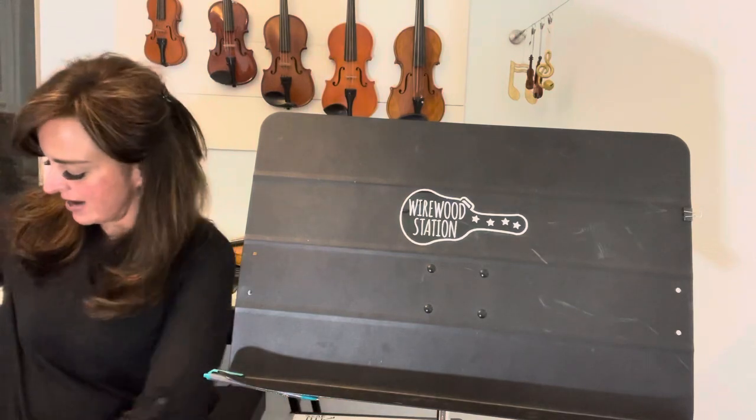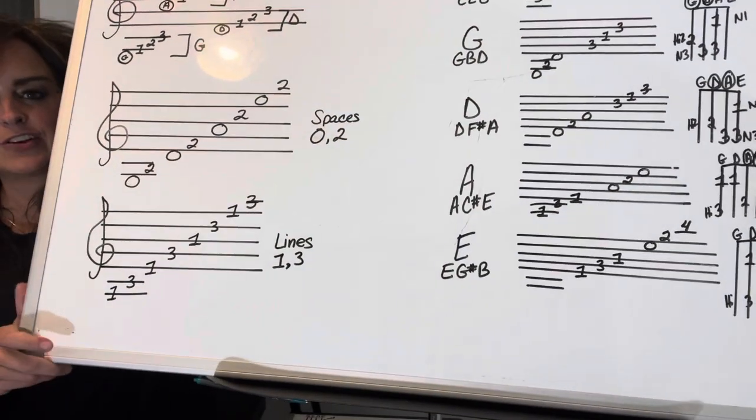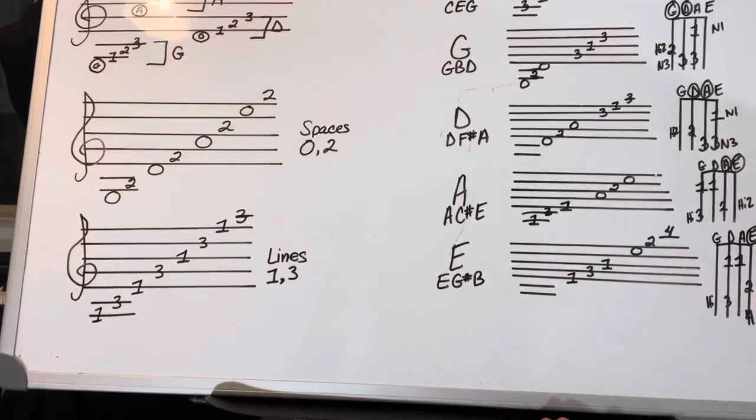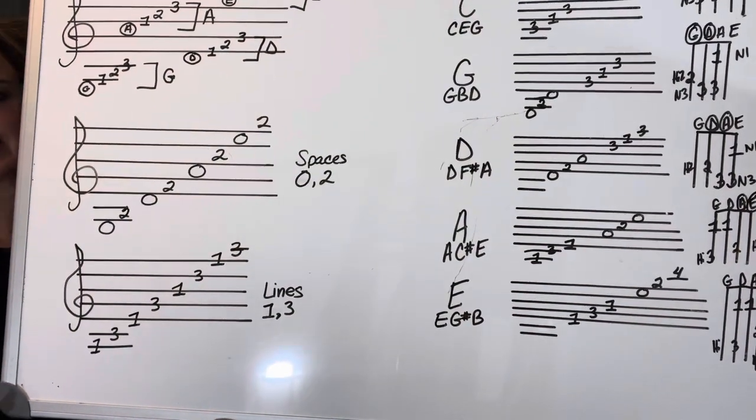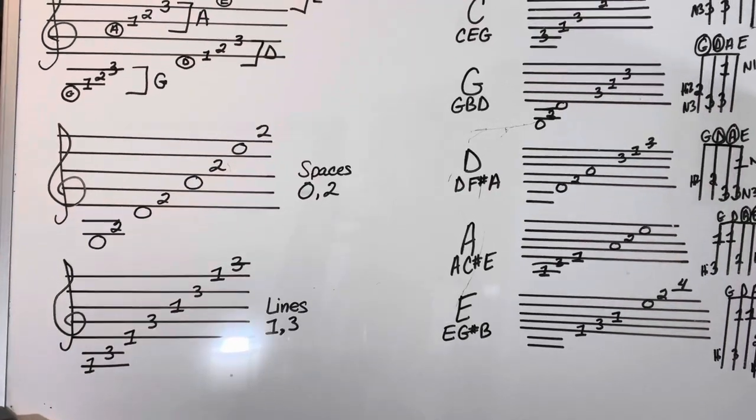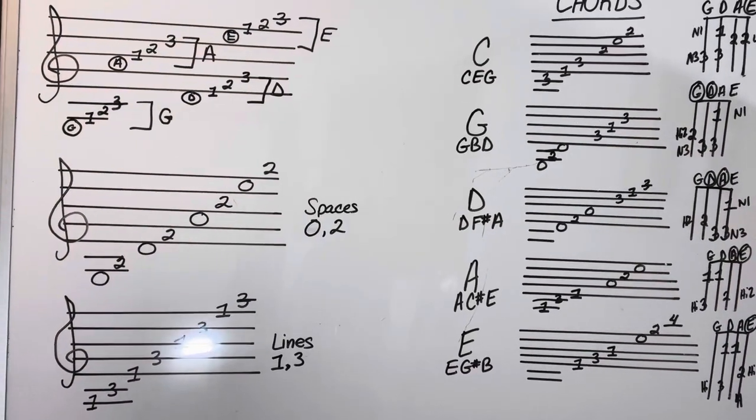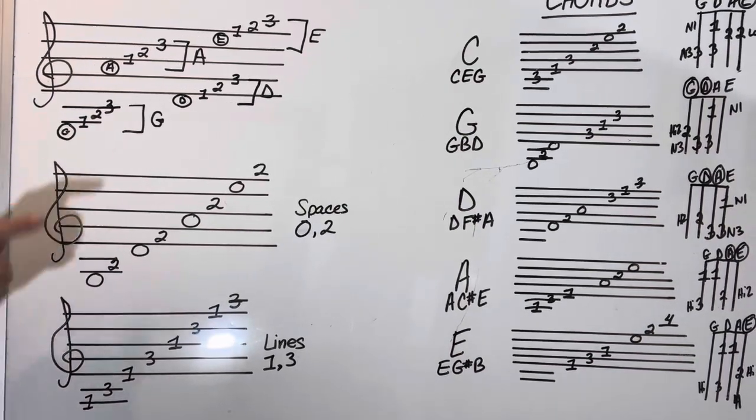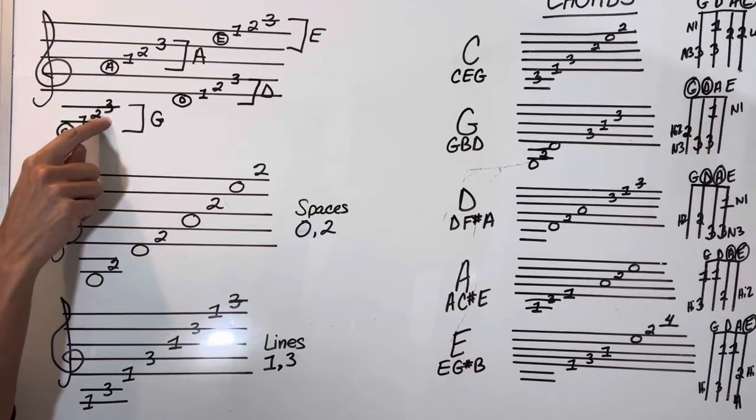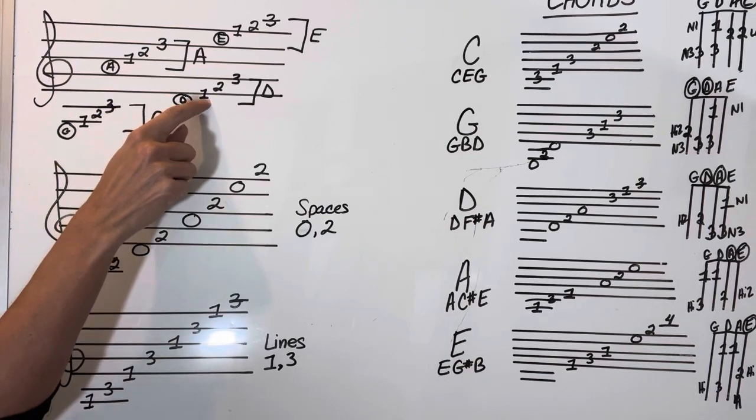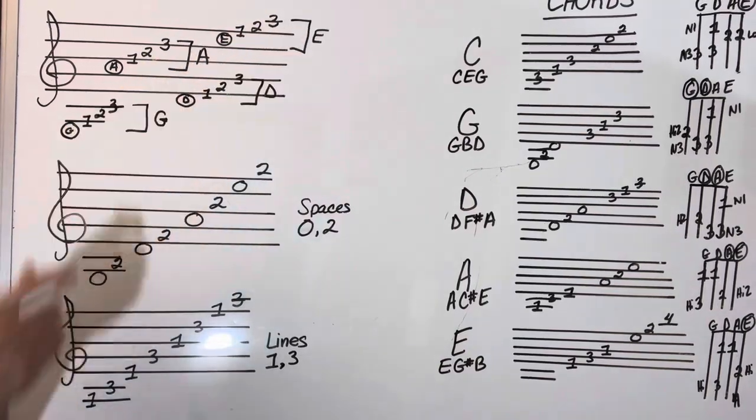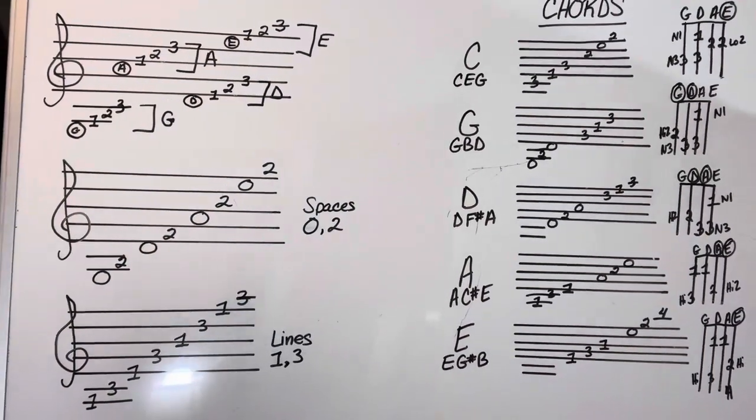Now if I bring this other chart in, this is where you can see how it relates to figuring out the chords. Some people think of it as open 1-2-3 G string, open 1-2-3 D string, open 1-2-3 A, open 1-2-3 E. That's another way you can look at that.